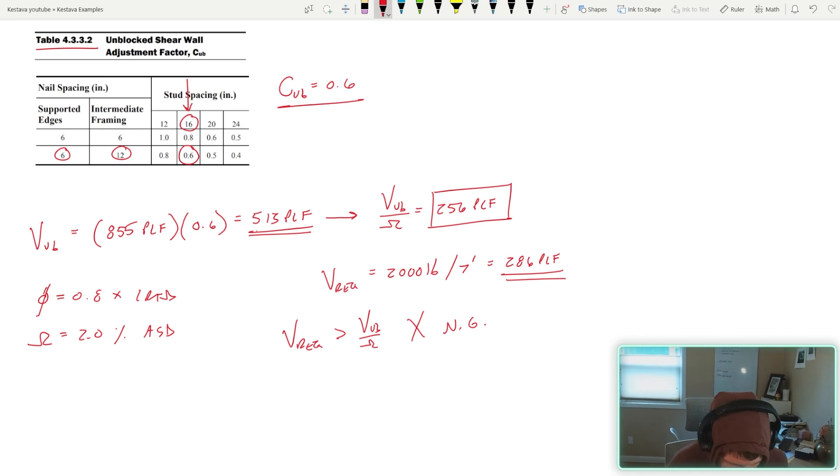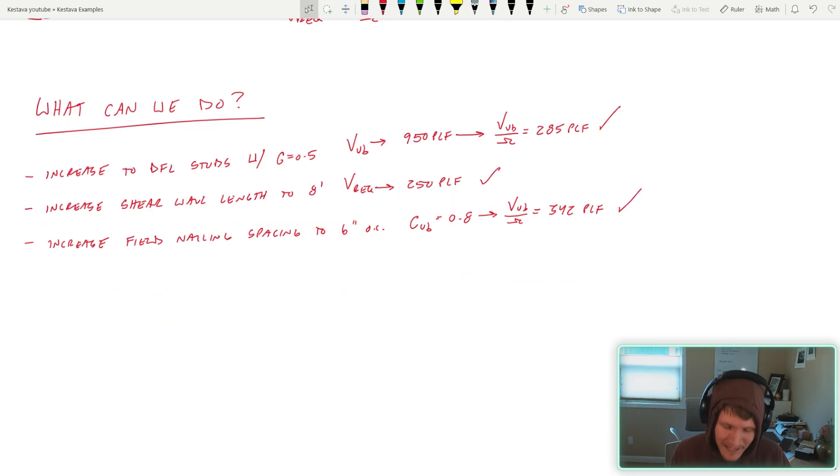But what can we do? Let's take a look. Off the top of my head, this is what I come up with. We can increase the stud specific gravity to 0.5. In order to do that, you need to change the species of studs that you're using for your shear wall. I'm in the Pacific Northwest, so a very common building material is Doug Fir Larch, which is specific gravity of 0.5. We could switch out the stud framing to that, which takes out that 0.9 reduction in our V sub B, so instead of 855, that keeps us at 950 PLF from the table. Going through the equation, that gets us a final capacity of 285 PLF, so that would get us there.